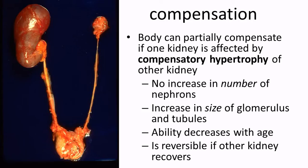Having two kidneys provides compensation — if one starts failing, the other compensates. However, damaged nephrons don't get repaired; there's no increase in nephron numbers. Instead, they become hypertrophic — bigger — in what's called compensatory hypertrophy. Unfortunately, as we age, we have a decreased ability to compensate, which is why you see a lot of renal problems in older people.